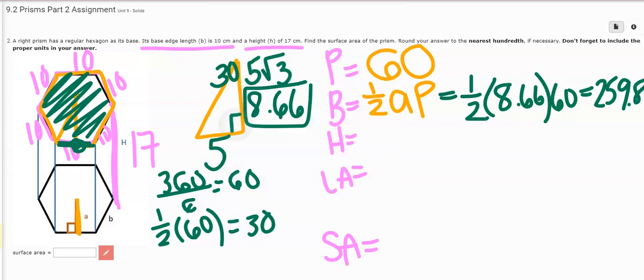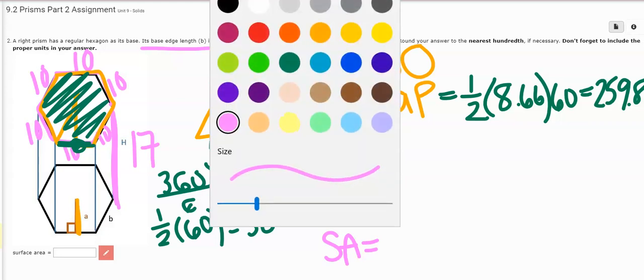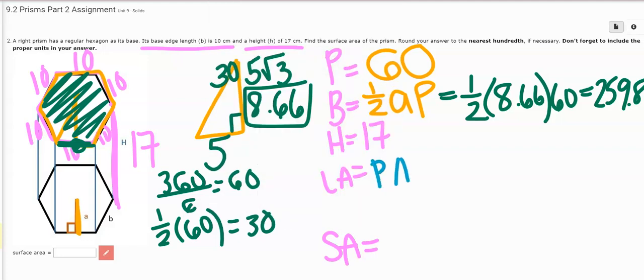Now, the straight up and down height, I got already a 17 that was given to me. The lateral area is just the perimeter times the height. So I have the perimeter and I have the height. So 60 times 17. 60 times 17, when I work that out, I get 1020.